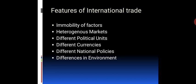Next is different political units — international trade takes place between countries ruled by different political units. Their policies, ideologies and aims are different. Another feature is different currencies: in each and every country the currencies differ, and trade takes place between countries having different currencies. It depends upon availability of foreign exchange, and exchange rates play an important role in international trade.